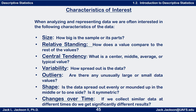Sometimes we're interested in all of these, sometimes only some of them, but these are the most commonly measured things. The first one is just size — how big is the sample? Or how big is this population? Or how big are the parts of the sample — the different sub-parts? Measures of size are extremely useful and important.